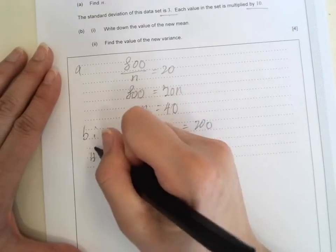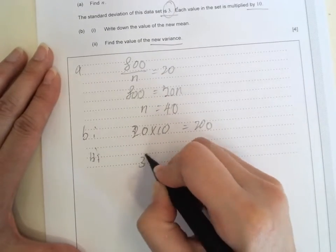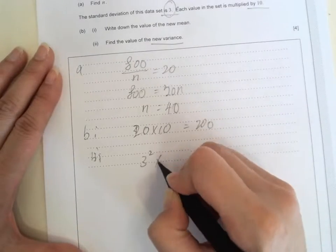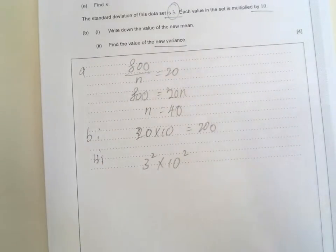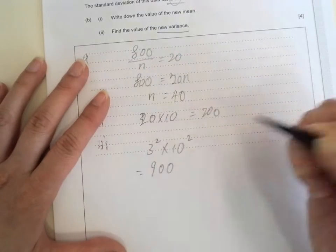And then B2 will be a bit tricky because of the new variance. So we have 3 squared to get back to the variance, and then times 10 squared because each of the data is multiplied by 10. So now we got 900 as the variance.